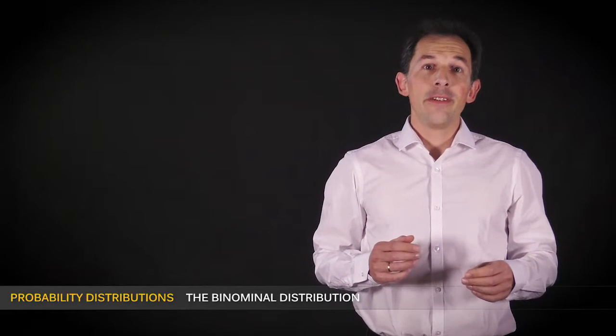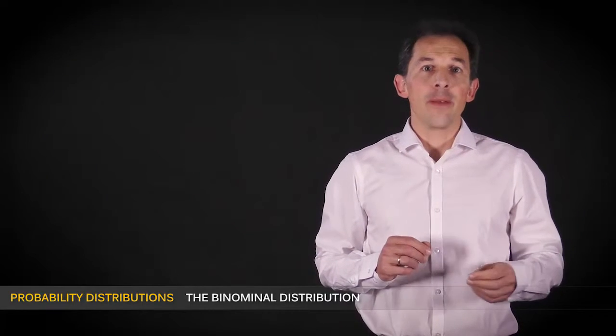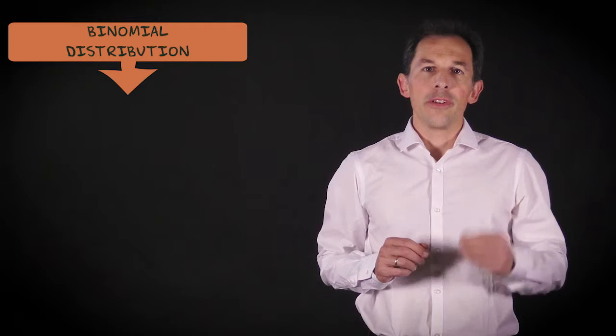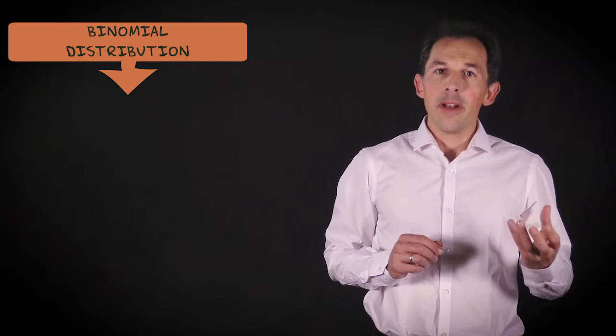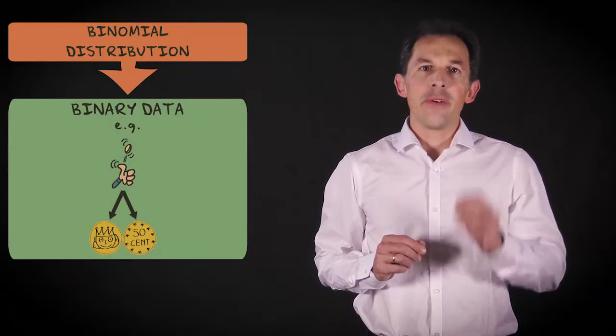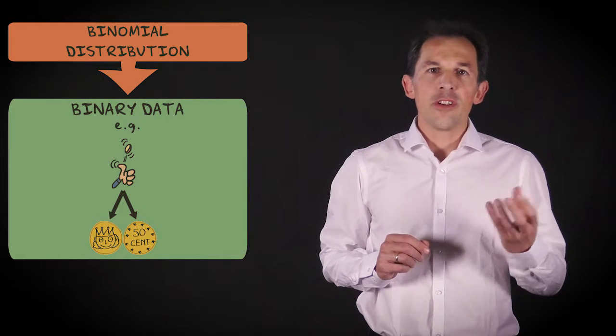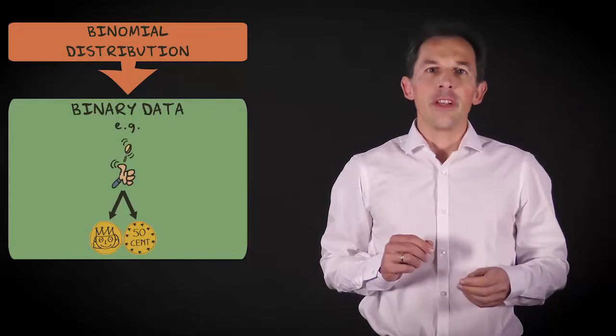The most important probability distribution for discrete random variables is the binomial distribution. It gives probabilities for counts with binary data. Because there are so many situations with binary data, it's used frequently.